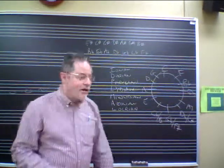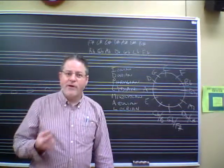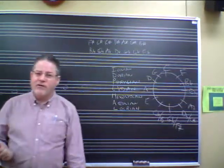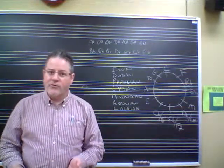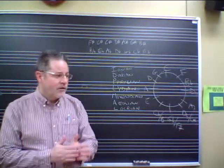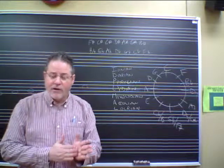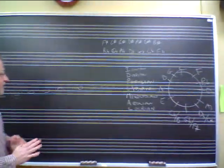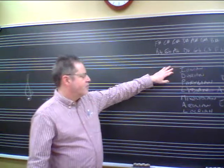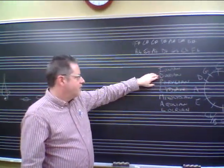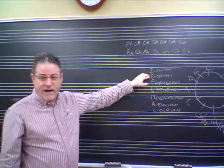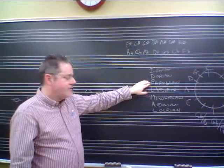What I want to do today is talk about the modes and how we can use the key signatures—adding or subtracting sharps or flats from key signatures—to make all the modes happen. First of all, the order of the modes: Ionian is the same as major. Dorian is like a natural minor with a raised sixth.